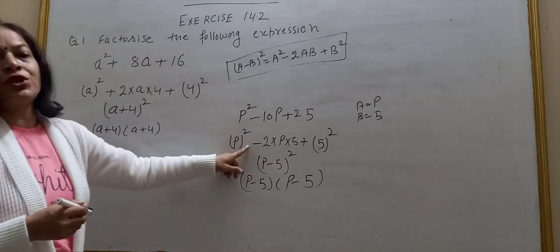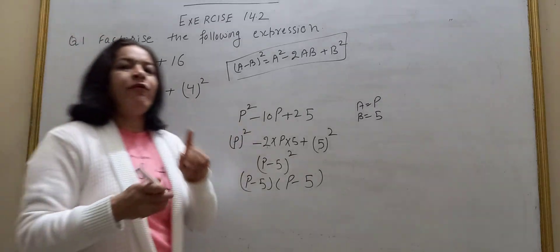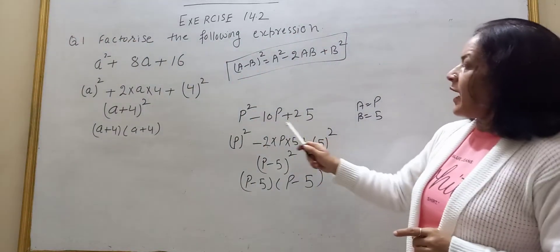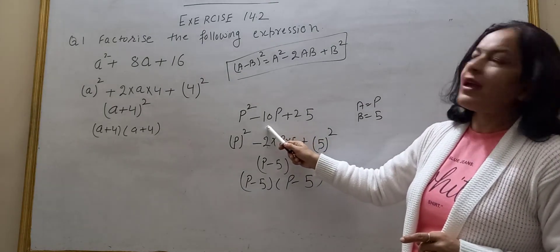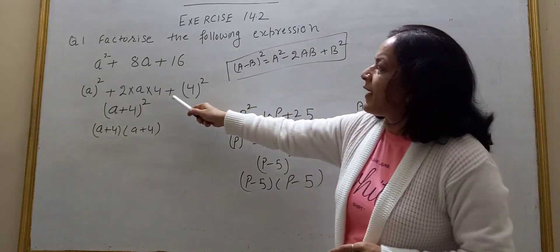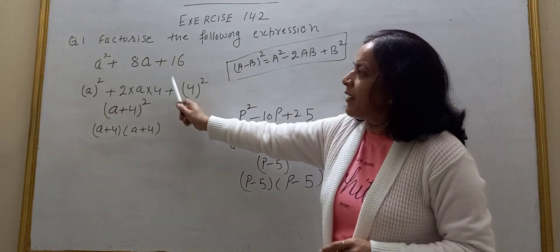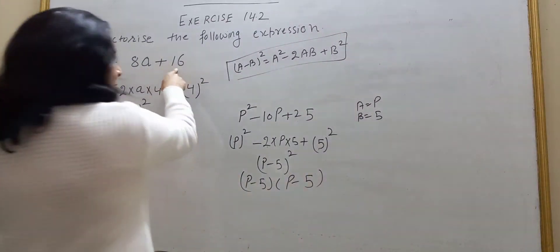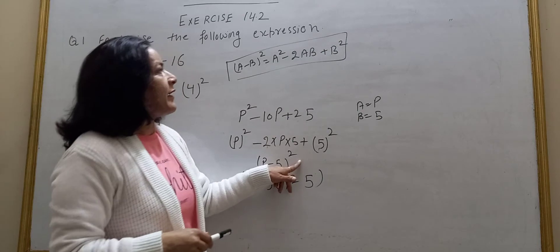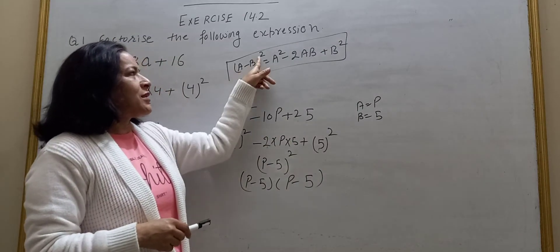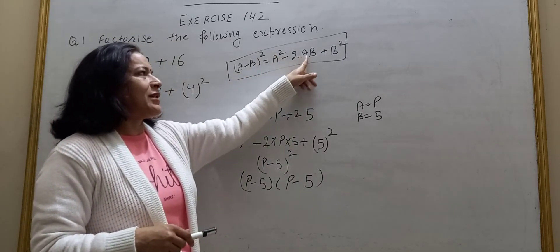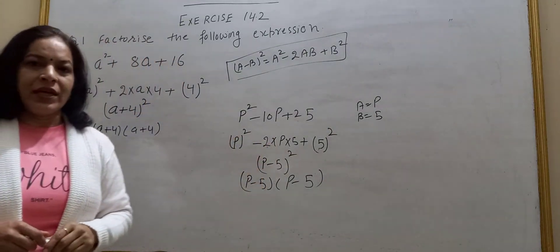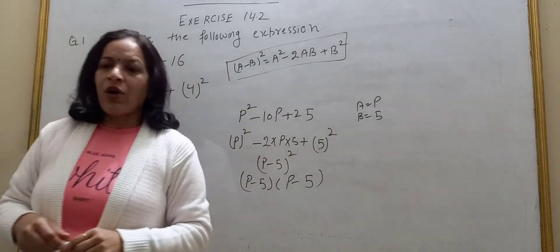What is the difference between the first question and this question? Only the sign. In the first question, middle term has plus; here, middle term has minus. So there I used identity A plus B whole square equals A squared plus 2AB plus B squared, and here I used A minus B whole square equals A squared minus 2AB plus B squared. Clear?